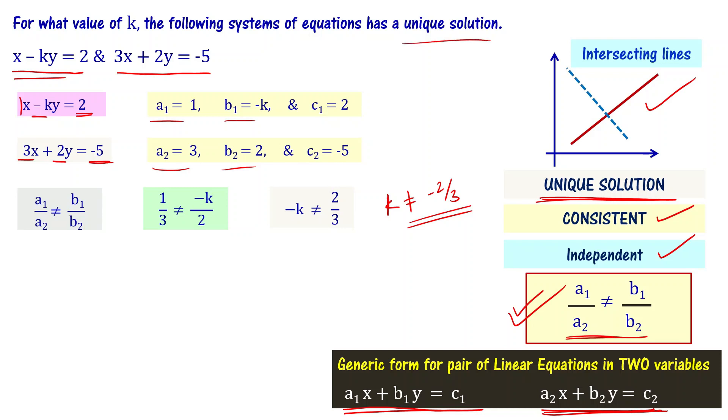One can work, two can work, three can work - any k value except minus 2 by 3. So let me assume that k equals 2. The equation becomes x minus 2y equal to 2 and the second equation is 3x plus 2y equal to minus 5. These equations will have a unique solution.